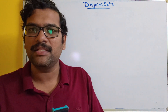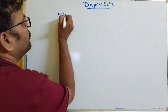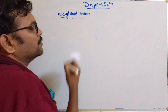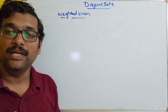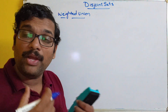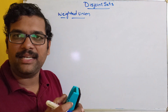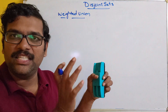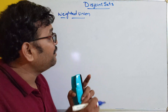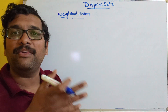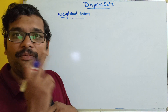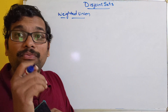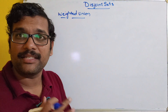Now we will see the third operation: weighted union. There is a slight difference between the simple union and the weighted union. In simple union, we just merge two different sets and form a single union. The parent of the root element is minus one. But here in weighted union, the parent of the root element will be the number of nodes of that particular set.